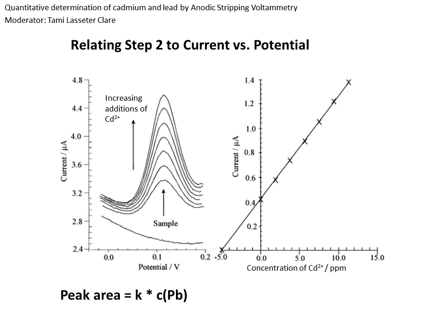The quantitation method we're going to use is the standard addition method. The first measurement you're going to take is the raw sample with no standards added to it — you do the deposition step and then the stripping step, and hopefully you will see one or two peaks corresponding to cadmium and lead. If you see a peak that corresponds to cadmium or lead, then you will add in that standard. So if you see a peak for lead, you will be adding spikes of the lead standard; if you have cadmium, then you will add spikes of the cadmium standard. If you see both peaks, then you need to add spikes of both.